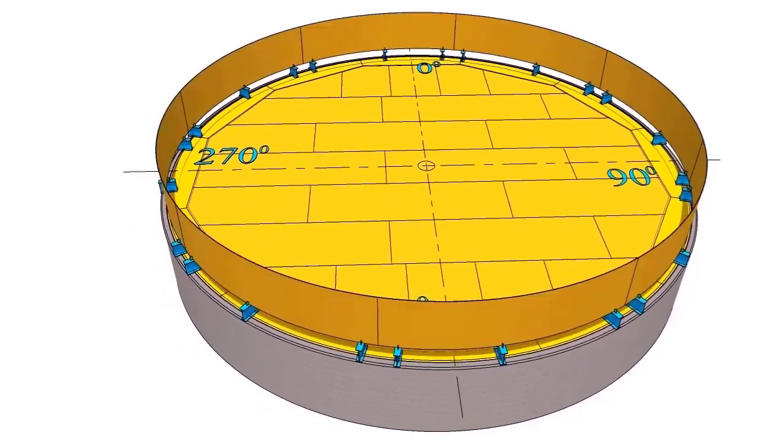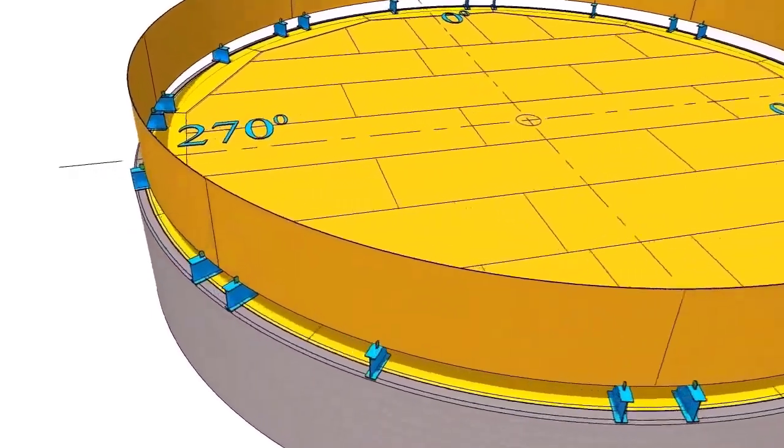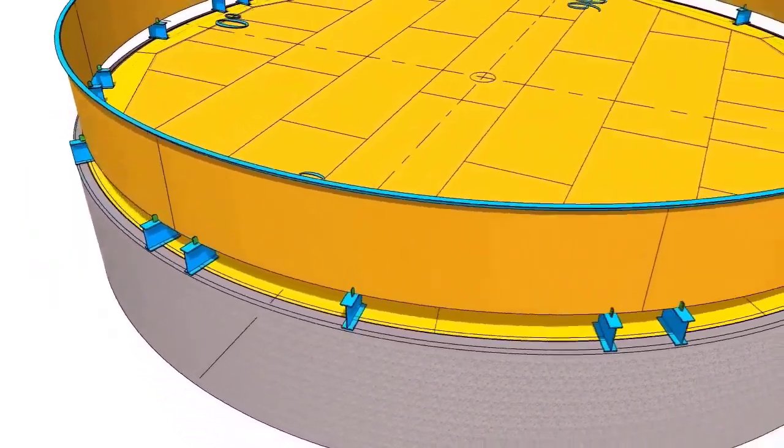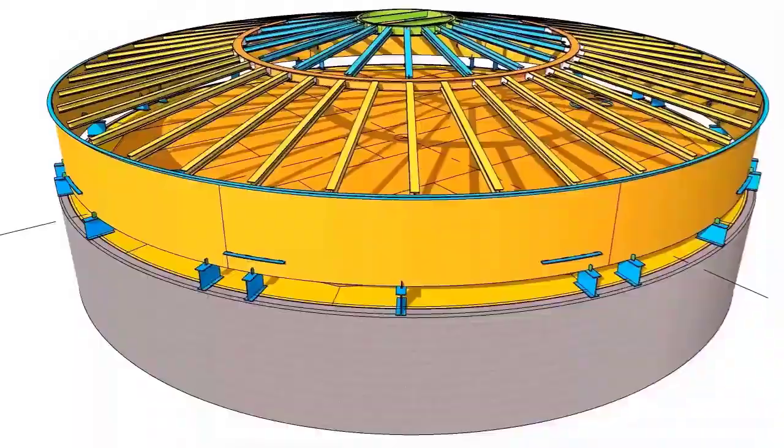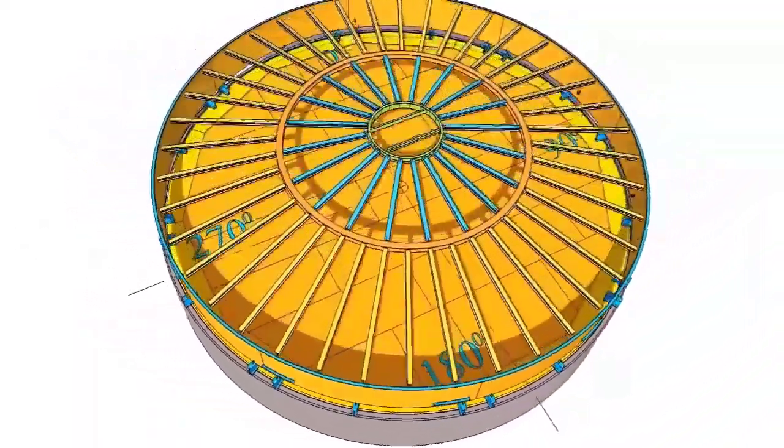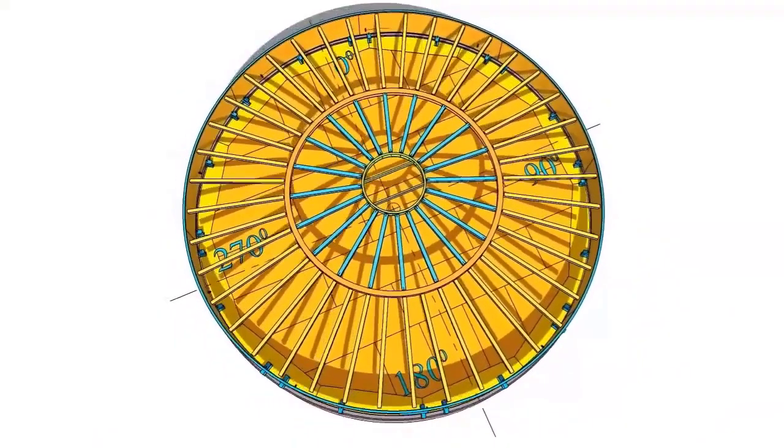Erect top shell course on the chairs placed on the annular plate, taking care to match inner diameter. Install the curb angle. Install the roof structure. Install the lifting system using the same method used in the jacking system.